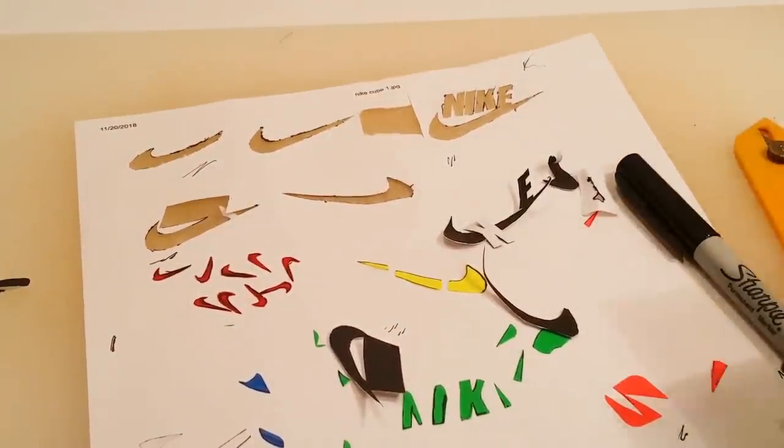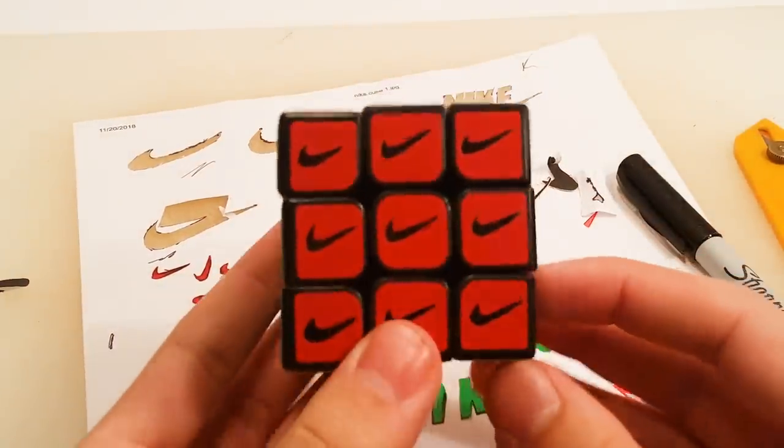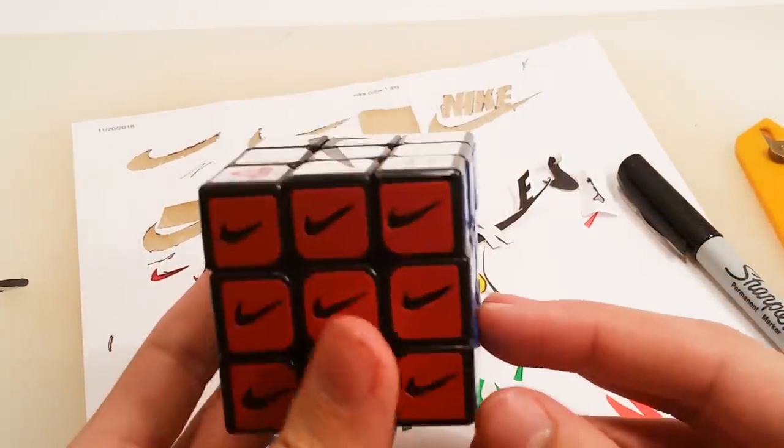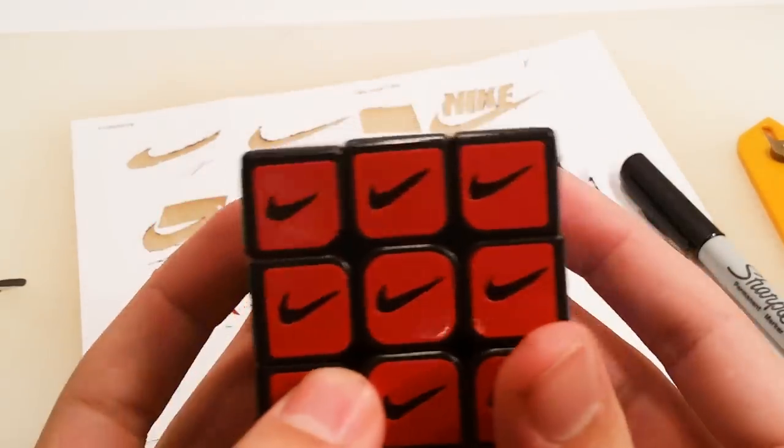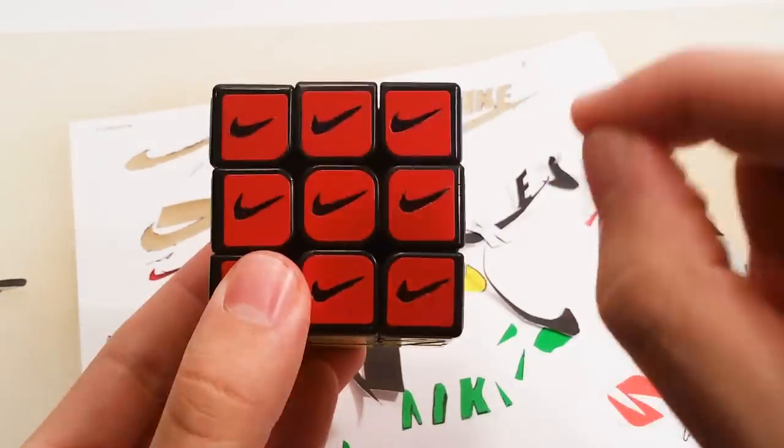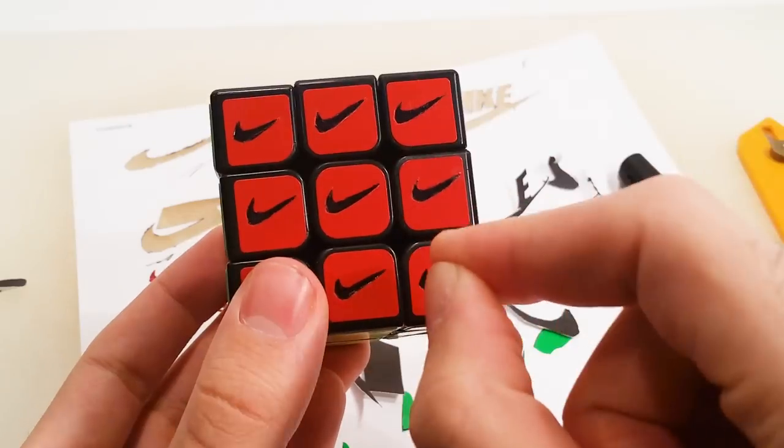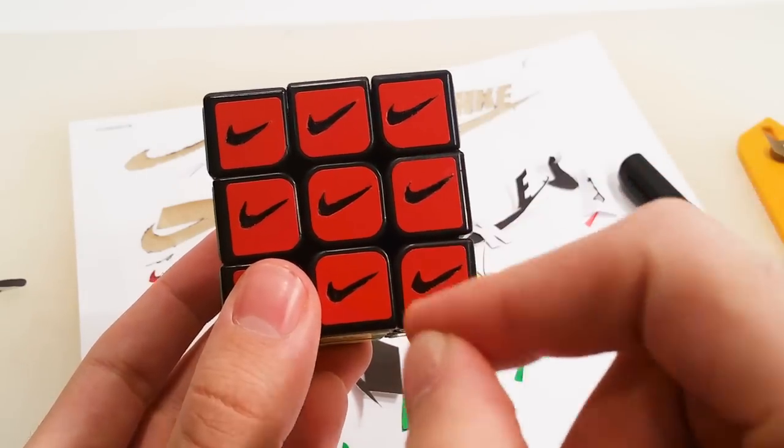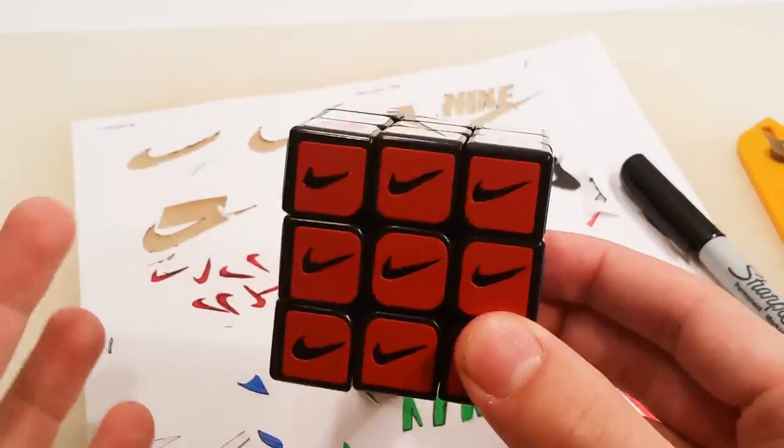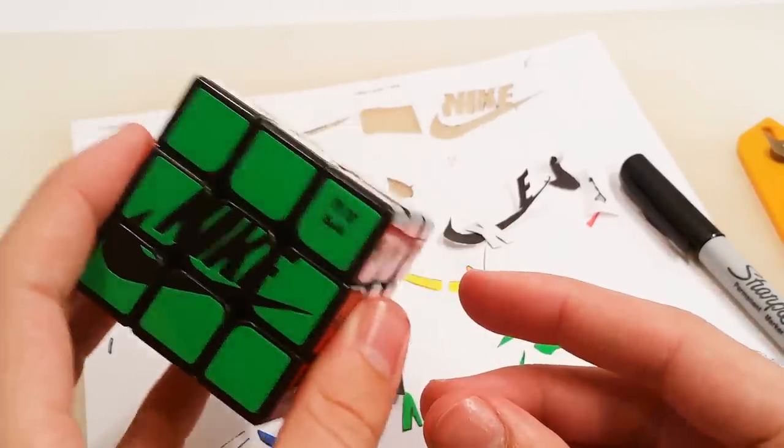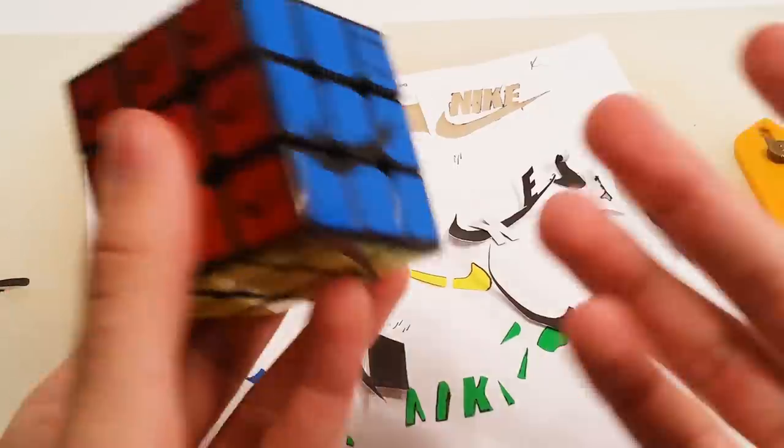Unfortunately, that did mean on some of the harder sides, like this red side, this was definitely the hardest side. If you look closely, there are some scratches and scuff marks and whatever, because taking an X-Acto knife straight to the puzzle does scratch it up a little bit. But overall, especially on a black cube, it's difficult to see that, so it turned out pretty well.